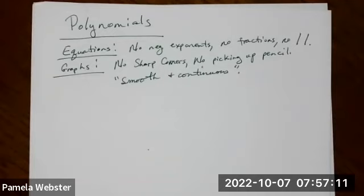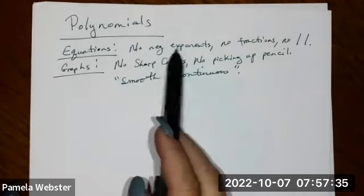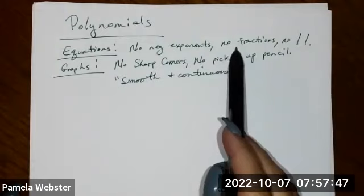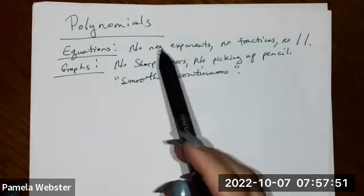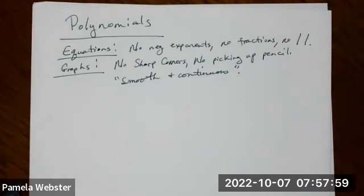Let's work on polynomials. There are two ways to look at an equation or function: one is by looking at the equation itself. In order for something to be a polynomial, it can't have negative exponents, fractions, or absolute value. A square root means a fraction exponent, and x in the denominator means a negative exponent. You can look at an equation and say whether or not it's a polynomial just by checking the exponents.